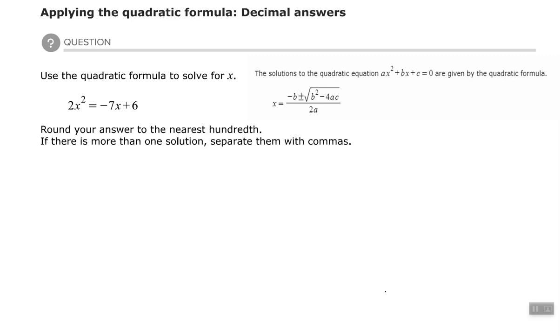Hey good people, Arthur Morris here. In this video we're going to look at applying the quadratic formula but getting a decimal answer. The process is still the same. However, if you look at this problem, we have 2x² = -7x + 6.